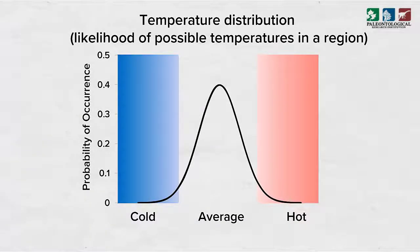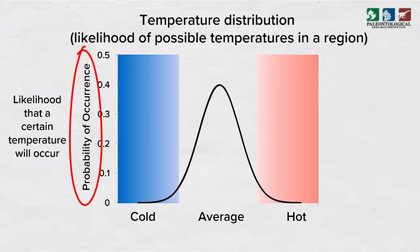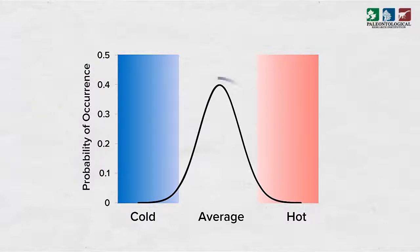We can describe the temperatures of many regions around the world using a bell curve, as shown here. The vertical axis shows probability of occurrence. That means the likelihood that a certain temperature will occur. And a higher probability of occurrence means a temperature is more likely to occur. Temperatures are most likely to be at or near the average.